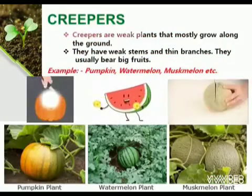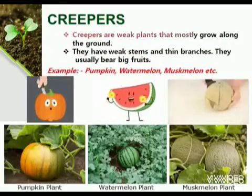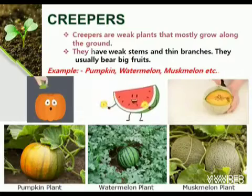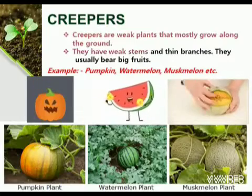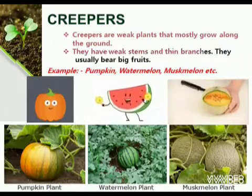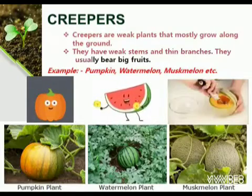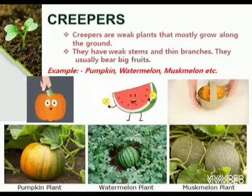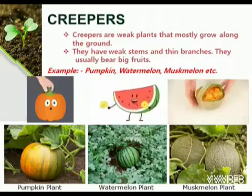Creepers. Some plants have weak stems and grow along the ground. They are called creepers. For example, watermelon and strawberry.